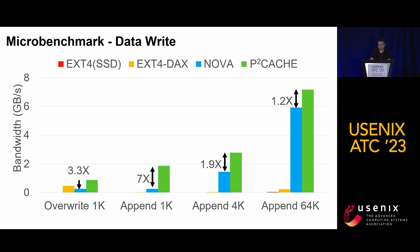Next, we demonstrate how P2Cache benefits data operations. We chose four data operations: override 1K, append 1K, 4K, and 64K. Our solution outperforms other approaches in write performance due to its streamlined write IO path.